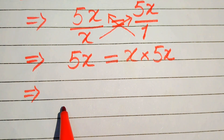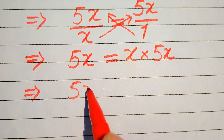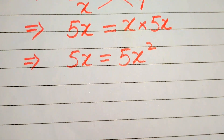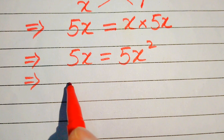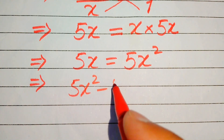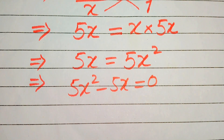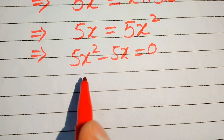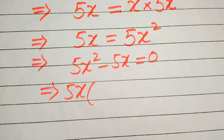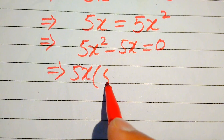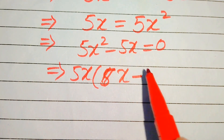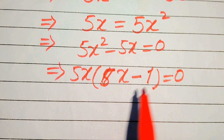In the next step we need to move this 5x to the right-hand side, and it will be written as 5x squared minus 5x equals 0. Now you see both of these terms involve 5x, so we take 5x as common, and after taking out 5x we get the remaining values: x minus 1, and this equals 0.